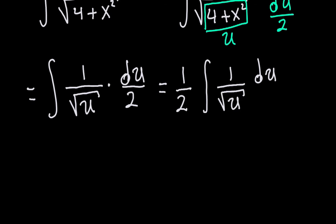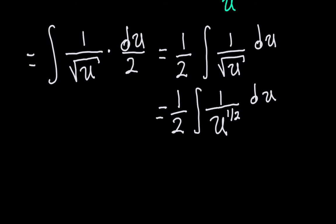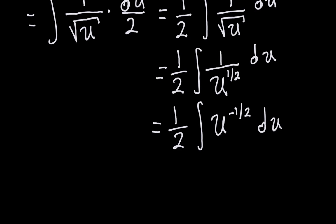Now I need to integrate this fraction. I'm going to rewrite the square root as a power of one half. So this is exactly the same as one half times the integral of 1 over u to the one half, du. Assuming u is positive, which it is given our substitution, I can write this as u to the negative one half using the law of exponents — you put u to the one half in the numerator and change the sign of the exponent.